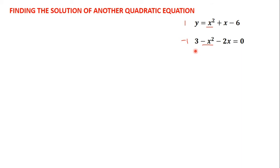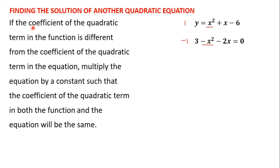So how do we use the graph to find the solution of such an equation? If the coefficient of the quadratic term in the function is different from the coefficient of the quadratic term in the equation, multiply the equation by a constant such that the coefficient of the quadratic term in both the function and the equation will be the same.